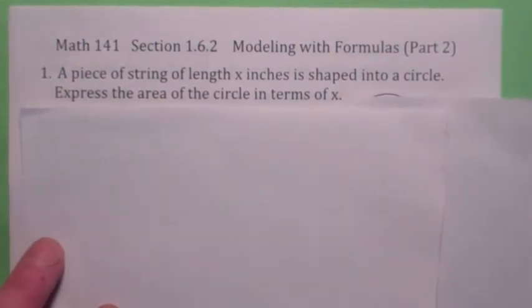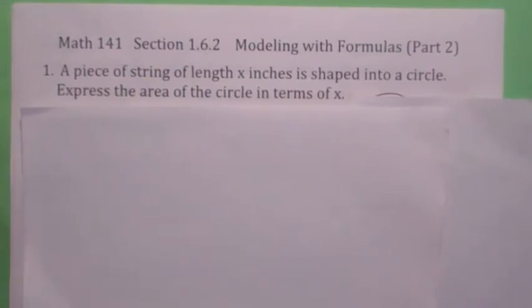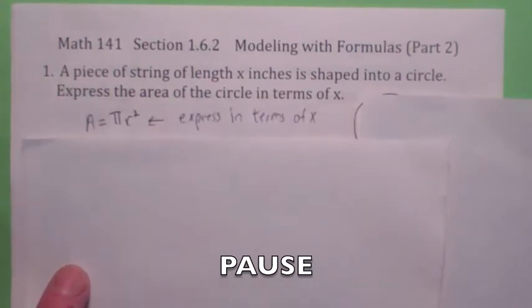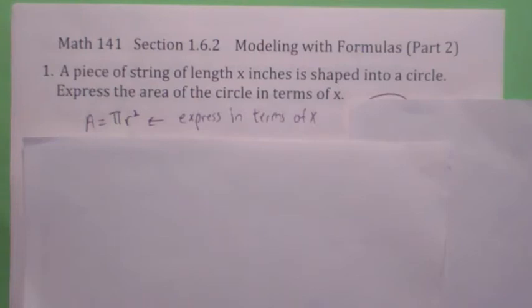Look at this first example. You've got a piece of string that's x inches long and it's going to be shaped into a circle and you want to express the area of the circle in terms of x, where x is the length of the piece of string. Okay, so the area of a circle is pi r squared and you want to express this in terms of x. But what is x?